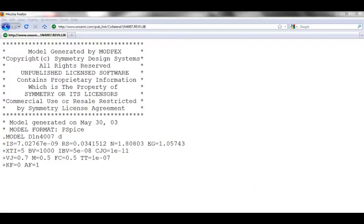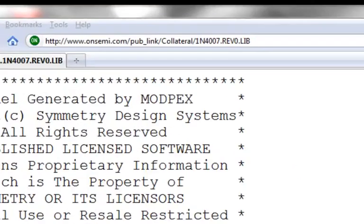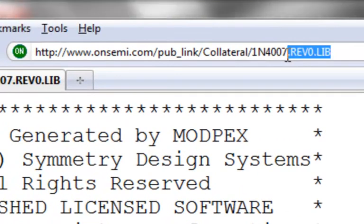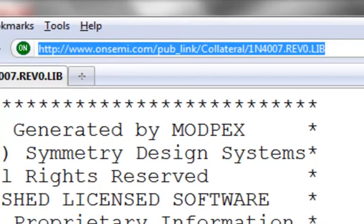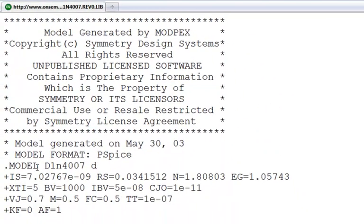For our circuit simulation, let's assume we are interested in adding a third-party general-purpose diode model. If you go to this third-party website, we'll notice that they have a library file available to download, and that this library file contains a dot-model statement.